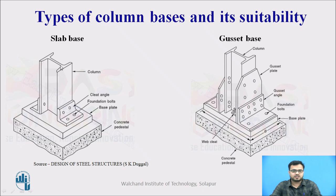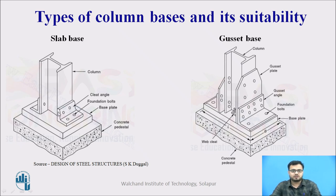For the slab base, the full load is transferred to the concrete by bearing action. For the gusset base, 50% of the load is transferred by the gusset plate and 50% by bearing action. We have to design the gusset plate and gusset angle. For bolted connection, a nominal cleat angle is provided; for welded connection, the section is welded. For light loads, we use the slab base; for heavy loads with moment or eccentric load, we use the gusset base.